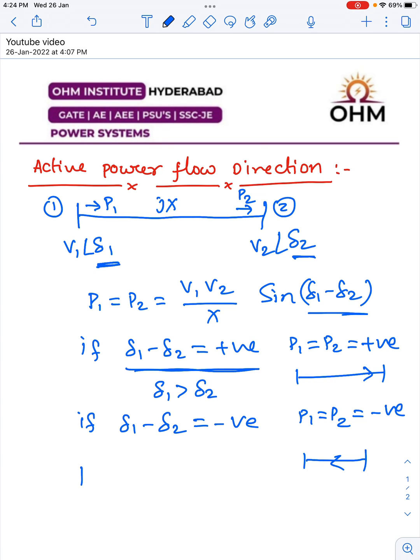For example, if bus 1 voltage is 1∠-10° and bus 2 voltage is 1∠0°, which has the higher load angle? Obviously, 0° is greater than -10°, so the active power flows from bus 2 to bus 1. Such simple questions are commonly given in Genco, Transco, and Discom exams. Thank you.